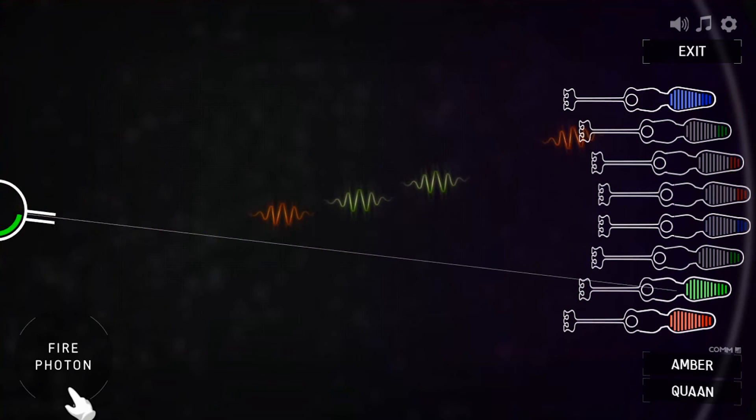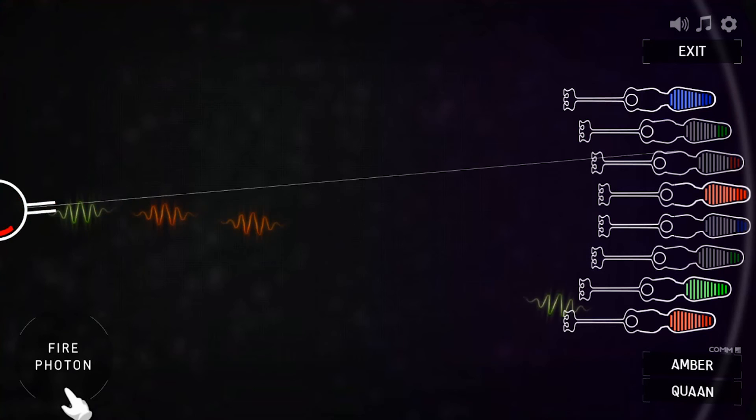The timing and getting all cone cells active at once is just a game thing. But the rest is a simplified version of exactly what happens in your eyes when you see colors.